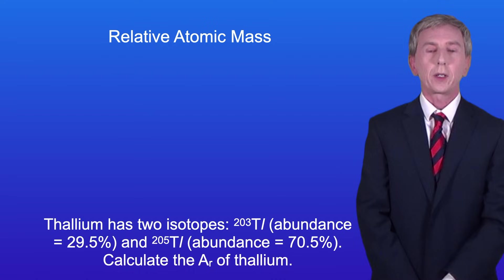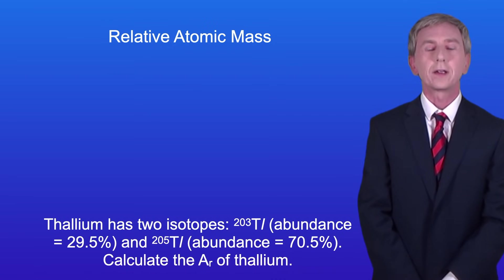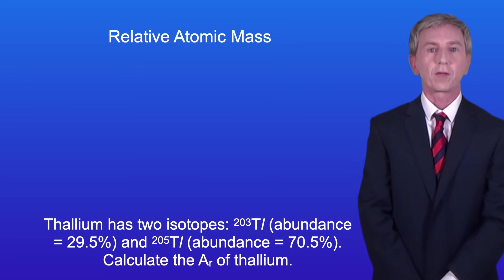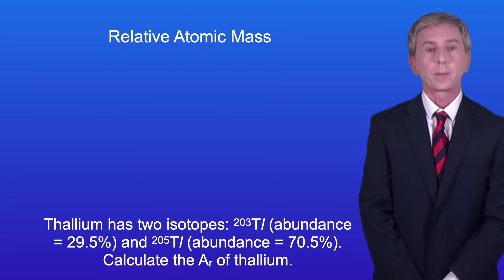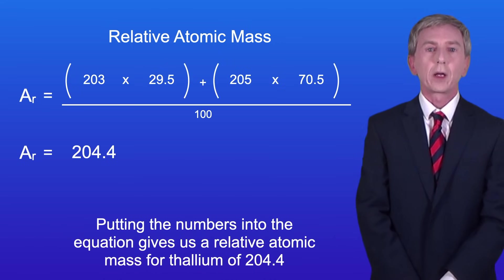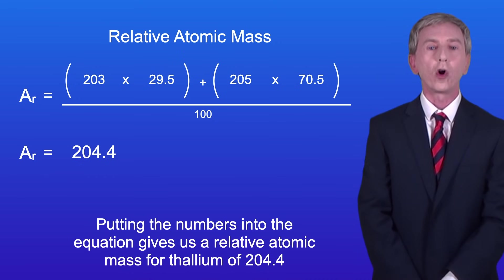Here's another example. Thallium has two isotopes: thallium-203 with an abundance of 29.5% and thallium-205 with an abundance of 70.5%. Calculate the relative atomic mass of thallium — pause the video now and try this yourself. Putting the numbers into the equation gives us a relative atomic mass for thallium of 204.4.